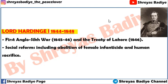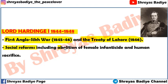Next is Lord Hardinge First, from around 1844. The main event during his time was the First Anglo-Sikh War, from 1845 to 1846 — which we have studied in detail. Lord Hardinge First also carried out many reforms, including the abolition of female infanticide, also called stree brun hatya or bal hatya, and abolition of human sacrifice.